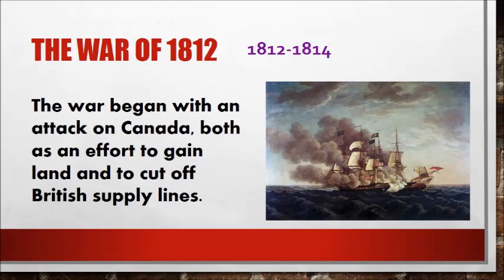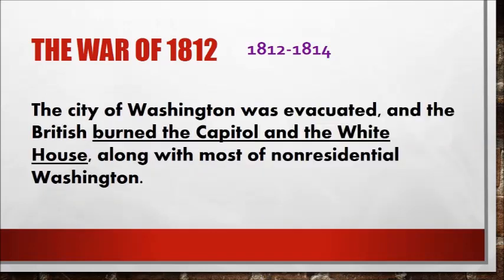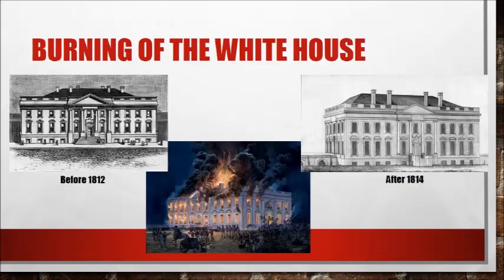The War of 1812 begins with an attack by the United States on Canada, both as an effort to gain land and to cut off the British supply lines. One major event that happened during the War of 1812 was the city of Washington, D.C. — it was evacuated, and the British burned the Capitol and the White House, along with most of the residential areas of Washington, D.C. Here you can see the pictures of the White House before 1812, of course while it is burning, and then after 1814, with it being restored.